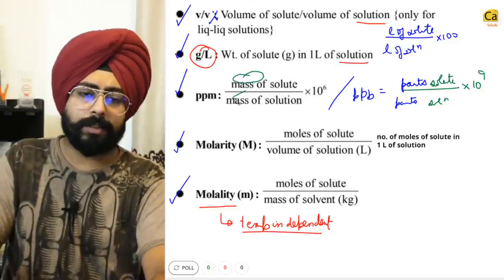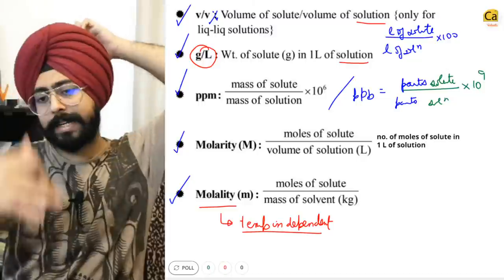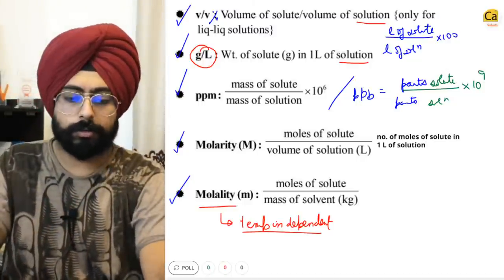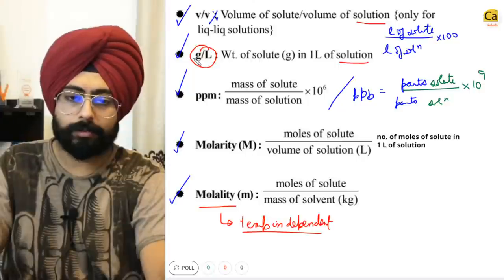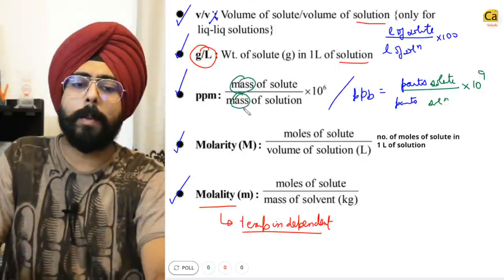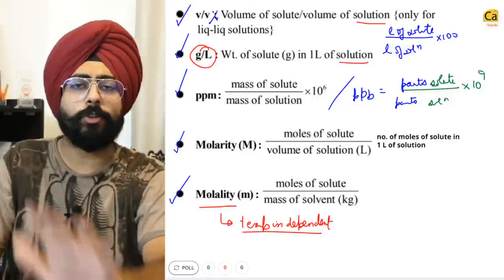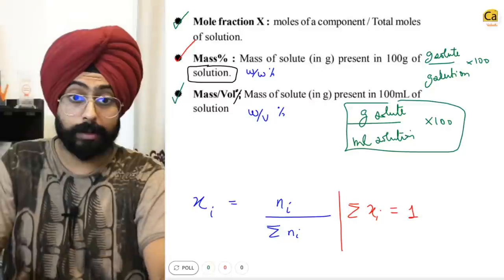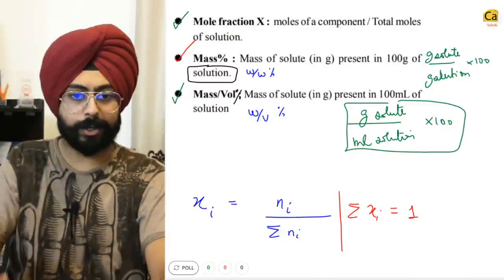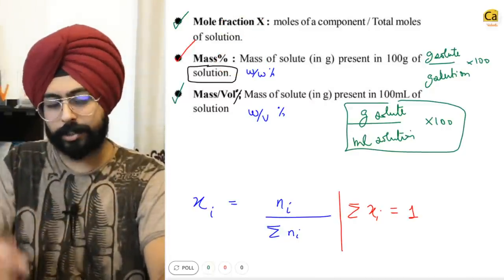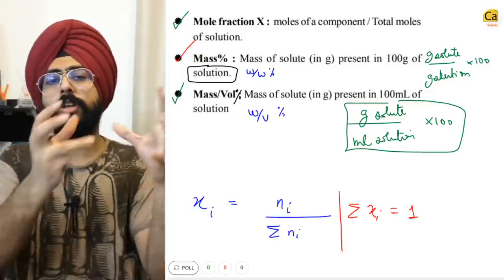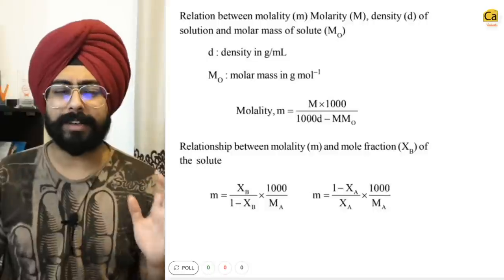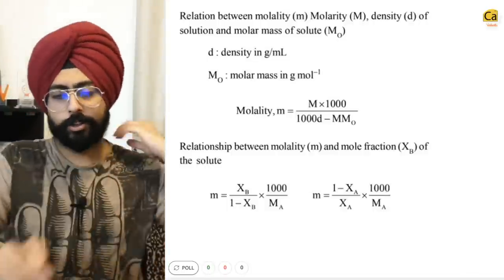Parts per million in terms of volume can be temperature dependent, but in terms of mass it's temperature independent. Mole fraction is temperature independent. Mass percent is temperature independent. Mass per volume is temperature dependent because volume can change with temperature. These are simple ideas we've also discussed in the solutions chapter.